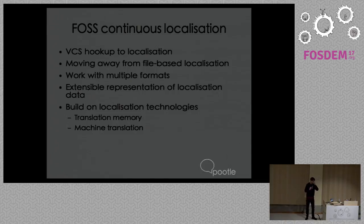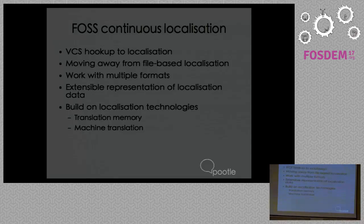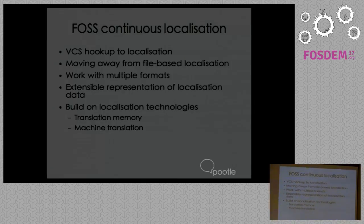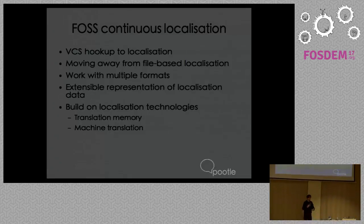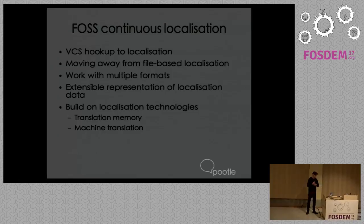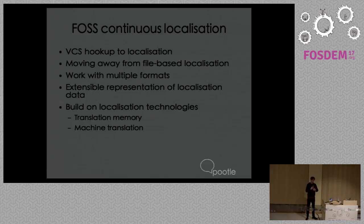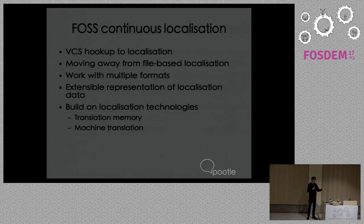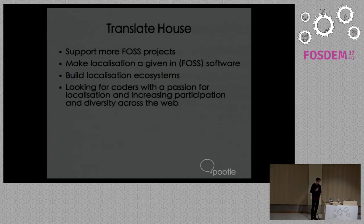There are some technologies quite specific to localization that are relevant to building organizational memory. Translation memory is probably the most obvious — for those not aware, it allows you to see how a string was translated previously and gives you prompts on how you might translate it. The other significant aspect, increasingly so, is machine translation. Historically machine translation has been pretty poor, but that's changing quickly, and even if it doesn't give you a perfect string, it can give you some pretty good prompts to speed up the localization process.